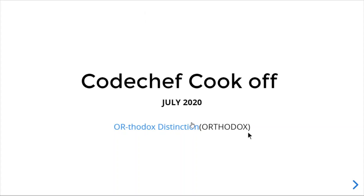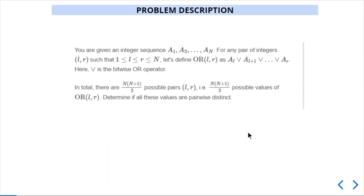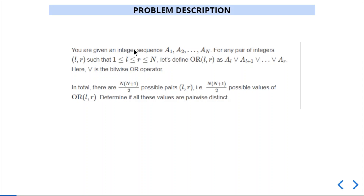This is the editorial video for Codechef Kokov's July 2020 problem 'Orthodox Distinction.' We are provided with an integer sequence from a1 to an, and for any integer values l and r we need to find the cumulative OR from l to r. There are n*(n+1)/2 possible pairs, and for each pair we need to check if the cumulative OR values are pairwise distinct or not.